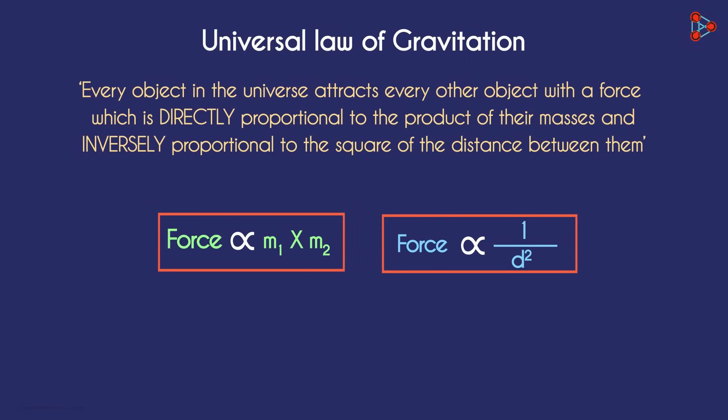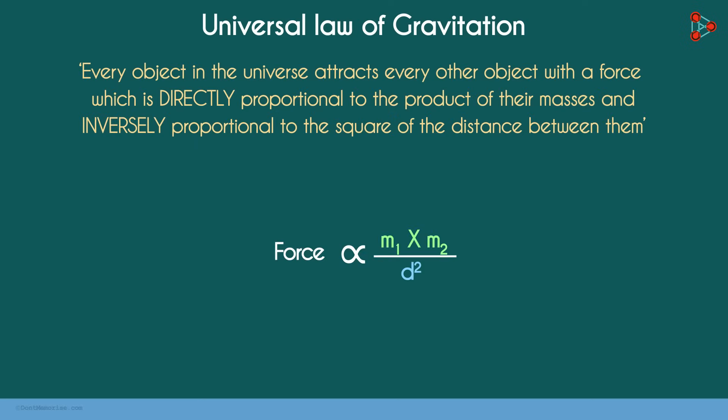With this data, we can write it mathematically. So if the mass of any of the objects increases, the gravitational force will have more magnitude. And more the distance between the two objects, the lesser will be the gravitational force. Directly proportional to the product of the masses and inversely proportional to the square of the distance between them.